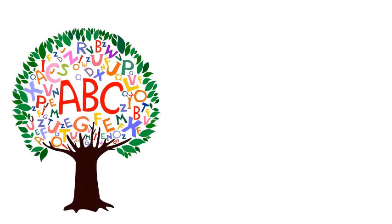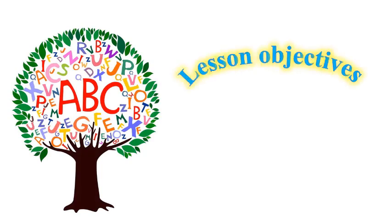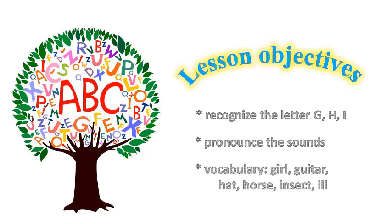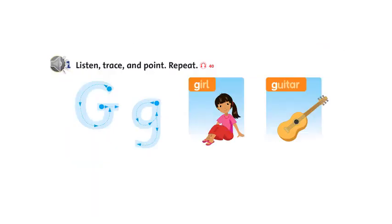Các em ơi, hôm nay chúng ta sẽ cùng nhau tiếp tục bài học Phonics nè. Mục tiêu của chúng ta là sẽ học được các chữ cái G, H, I và phát âm G, H, I và một số từ vựng: Guitar, Hat, Horse, Insect, and Ill. Chúng ta bắt đầu nhé. Letter G, Sound G.